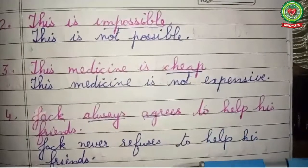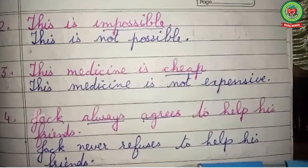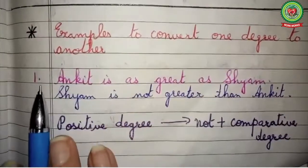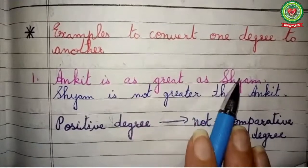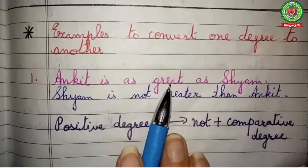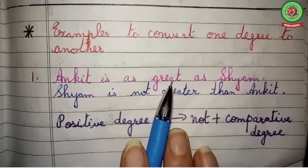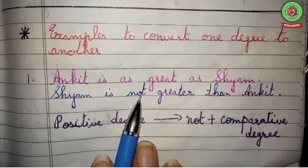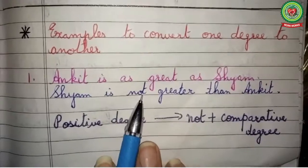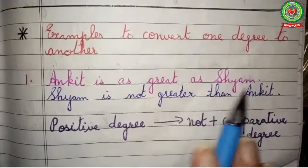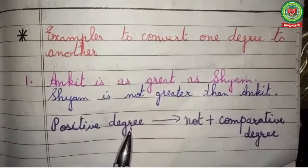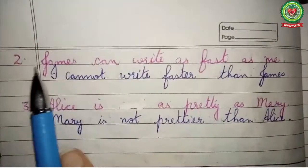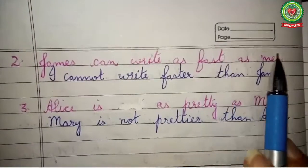Now let's read examples to convert one degree to another. Number one: 'Ankit is as great as Sham.' Here the positive degree 'great' is changed to the comparative degree 'greater,' and 'not' is added before it, so the answer becomes: 'Sham is not greater than Ankit.' The rule is that positive degree changes to comparative degree and 'not' is added. Number two: 'James can write as fast as me.'